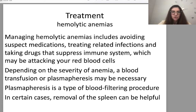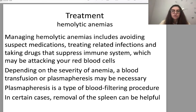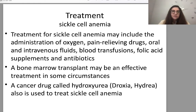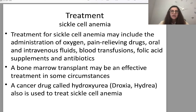For hemolytic anemia management: treatment includes avoiding suspect medications, treating related infections, and taking immunosuppressive drugs. Depending on severity, blood transfusion or plasmapheresis may be necessary; plasmapheresis is a type of blood filtering procedure. In certain cases, removal of the spleen can be helpful. Treatment for sickle cell anemia may include administration of oxygen, pain-relieving drugs, oral and IV fluids, blood transfusion, folic acid supplements, and antibiotics. Bone marrow transplant may be effective in some circumstances. The cancer drug hydroxyurea (Droxia or Hydrea) is also used to treat sickle cell anemia. Thalassemia may be treated with blood transfusions, folic acid supplements, splenectomy, bone marrow transplant, or other drugs.